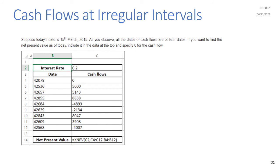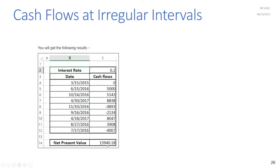If the earliest date in your data is March 15, 2015, and you want to find the net present value as of today, include today's date at the top of your data and specify zero for its cash flow. Then apply XNPV with the extended range C4:C12 for cash flows and B4:B12 for dates to get the NPV as of today.